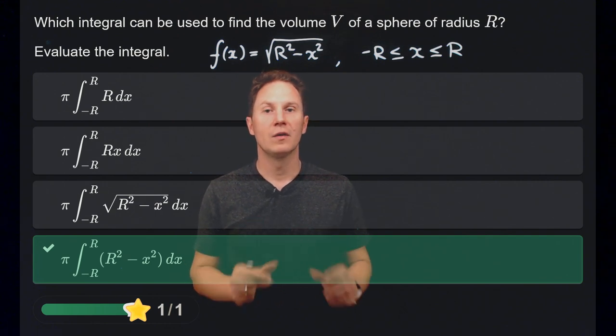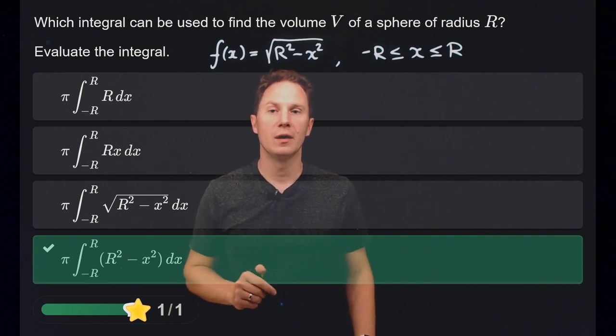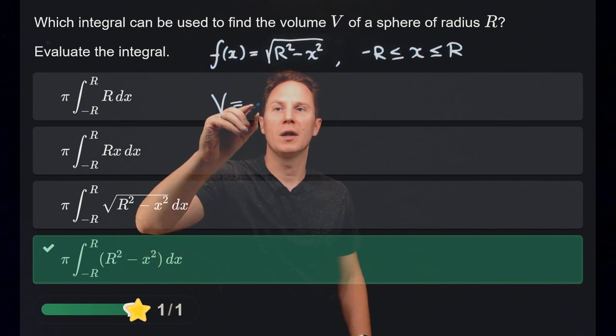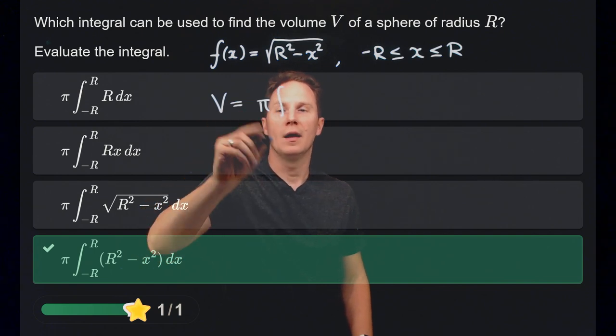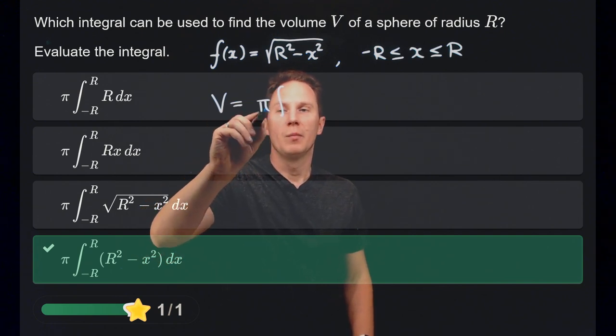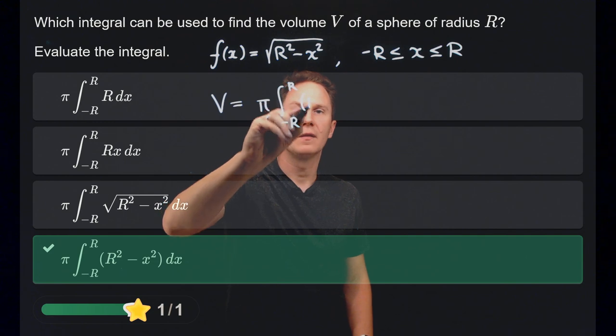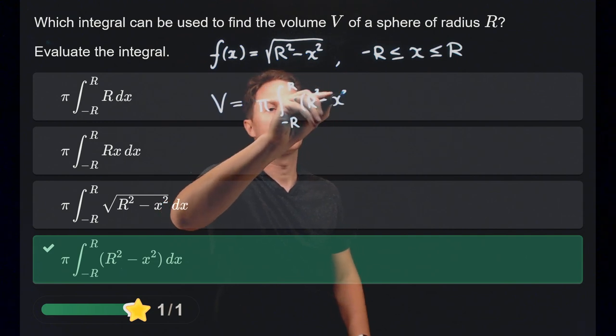That solid sphere is whose volume we are after. Now all we need for that is just squaring the square root of r squared minus x squared and multiplying the integral by pi. The integral from negative r to r of the square of that, that is just r squared minus x squared dx.